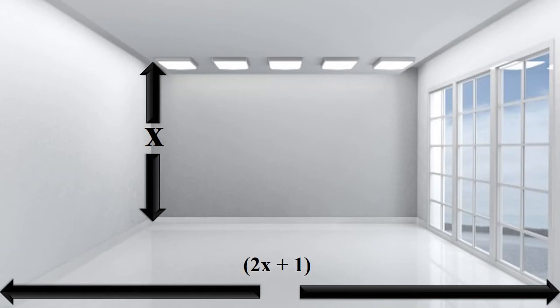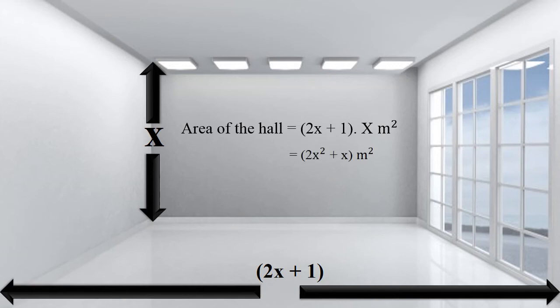Suppose the breadth of the hall is x meters, then its length should be 2x plus 1 meters. We can depict this information pictorially as shown here. Now area of the hall is equal to 2x plus 1 into x meter square, that is equal to 2 into x square plus x meter square.